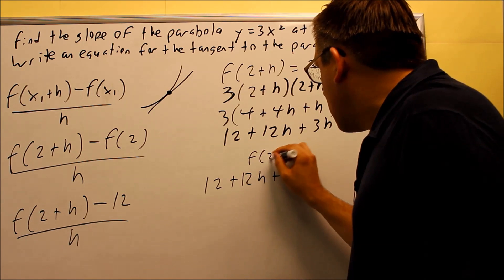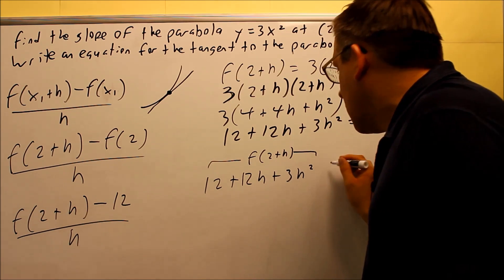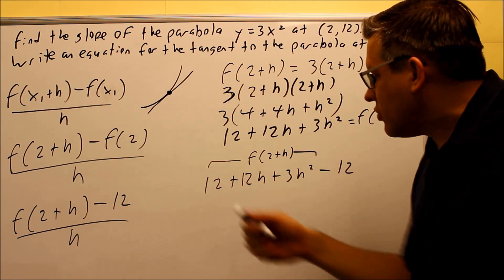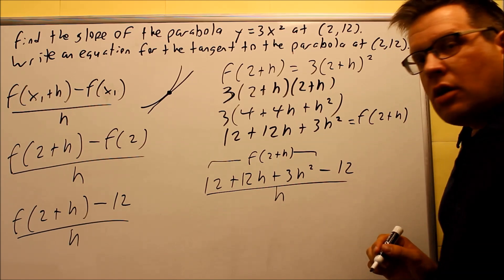I'm going to label this. This is our f of 2 plus h. Then I have the 12 is already there that I did earlier. That's f of 2. And I have all this over h.